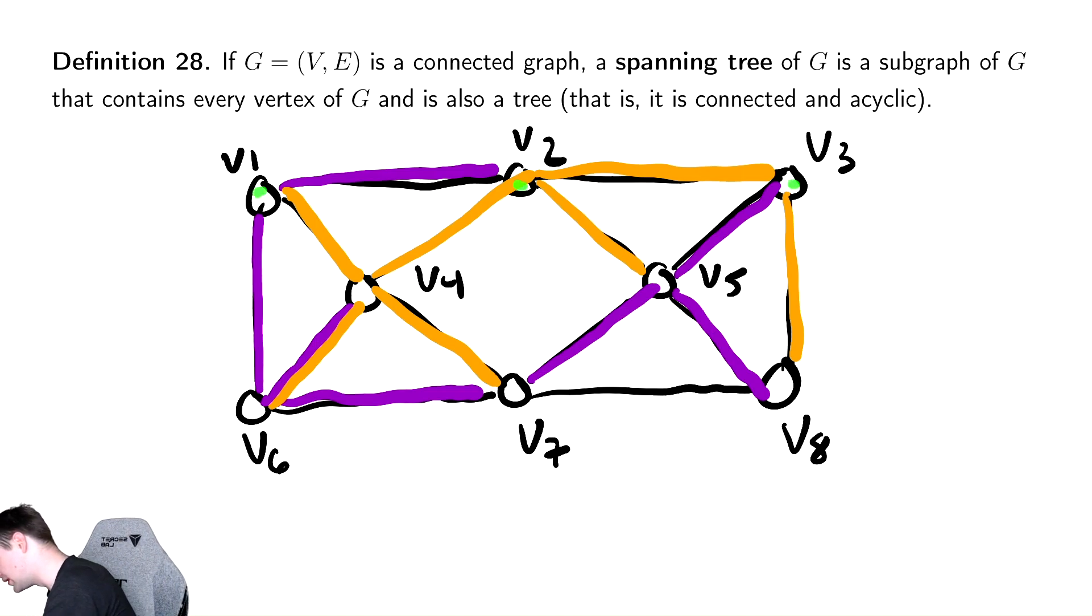And I believe this connects our vertex. We have V1, 2, 3, 5, 8, 7, 4, and 6. Yep. And it has no cycles. Therefore, this is a spanning tree.